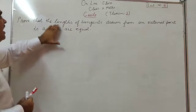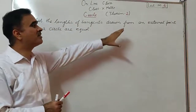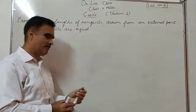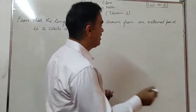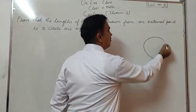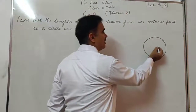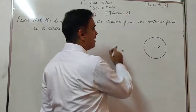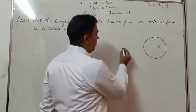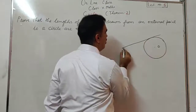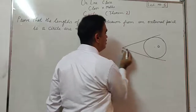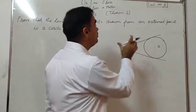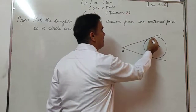Prove that the lengths of the tangents drawn from an external point to a circle are equal. First of all, you have to see some basics. This is a circle with center O. We take an external point, and from this point, how many tangents are possible? From the same point, there are only two tangents possible. We have to prove the lengths from this contact point.